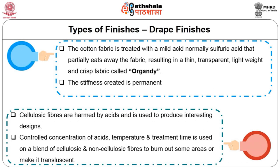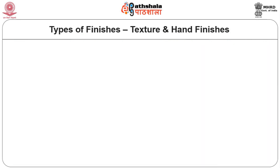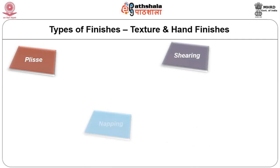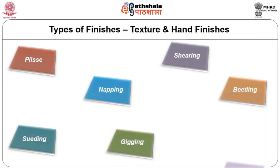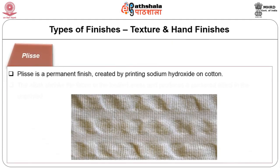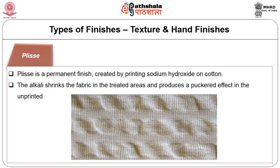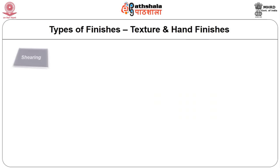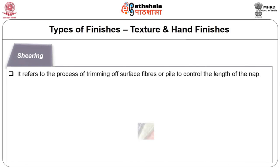The texture and hand finishes are plissé, shearing, napping, beetling, suiting, jigging and tigering. Plissé is a permanent finish created by printing sodium hydroxide on cotton — the alkali shrinks the fabric in the treated areas and produces a puckered effect in the unprinted area. Shearing refers to the process of trimming off surface fibers or pile to control the length of the nap, creating a smooth fabric with uniform surface.